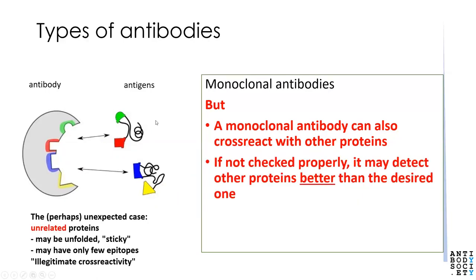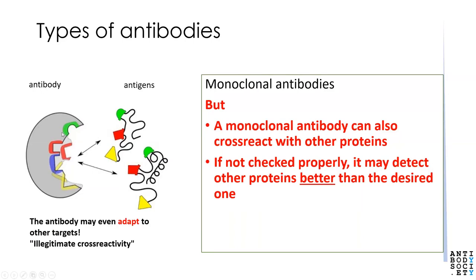The problem is that other species in the biological mixture could share just a few residues that bind to some of these sub-pockets. These may be totally unrelated — not recognizable by sequence — but just happen to react with a part of the binding site of this antibody. We might call this illegitimate cross-reactivity. If this is not checked properly, the antibody may actually detect some of these other proteins better than the desired one. Additionally, antibodies may change their binding site — they're somewhat mobile — and so therefore have even greater access to other epitopes of unrelated proteins.